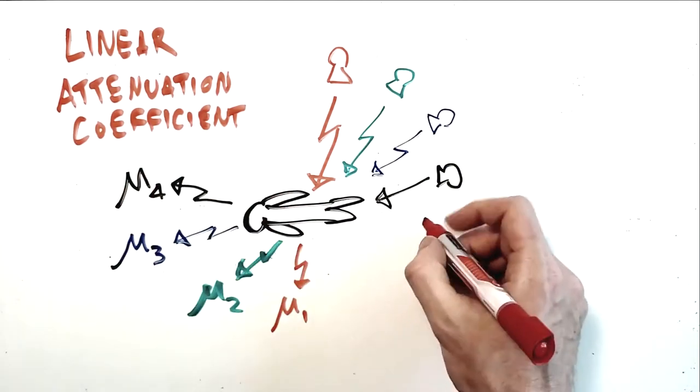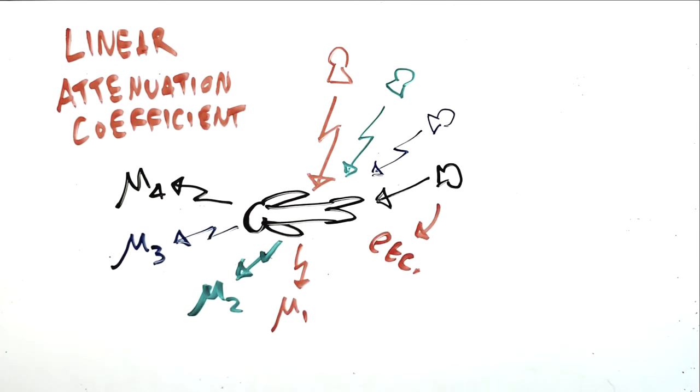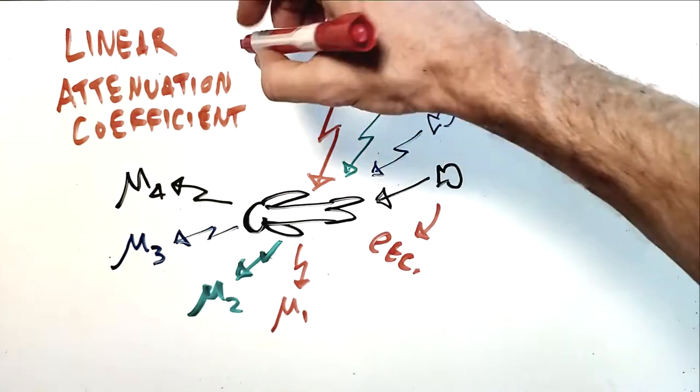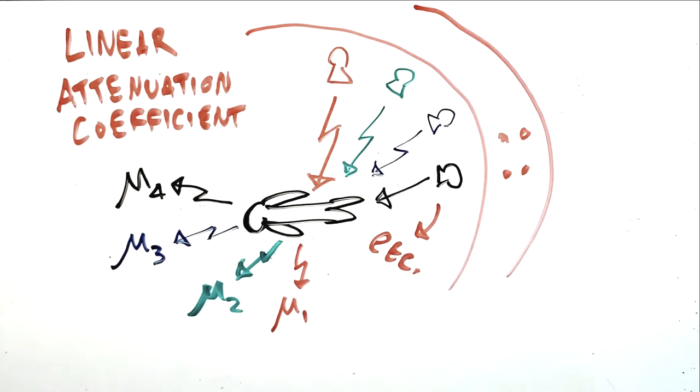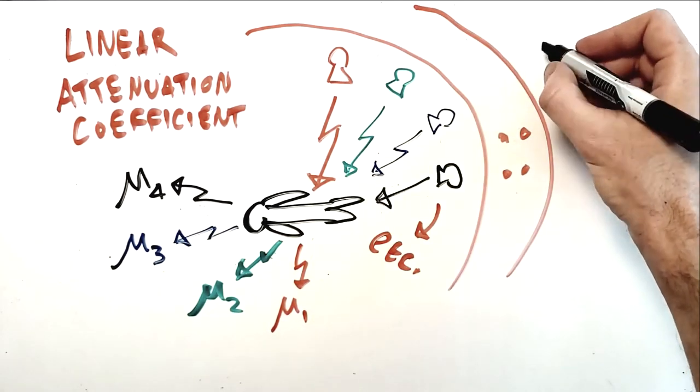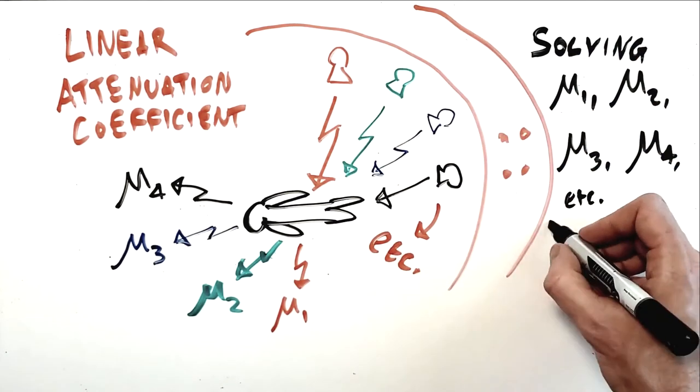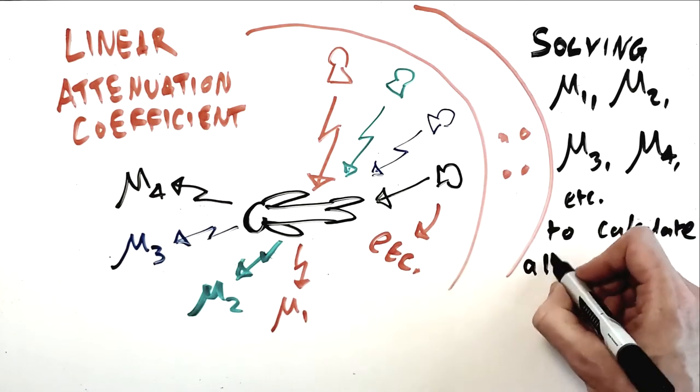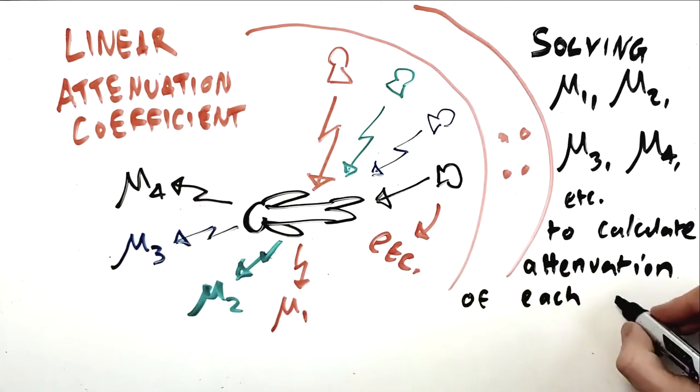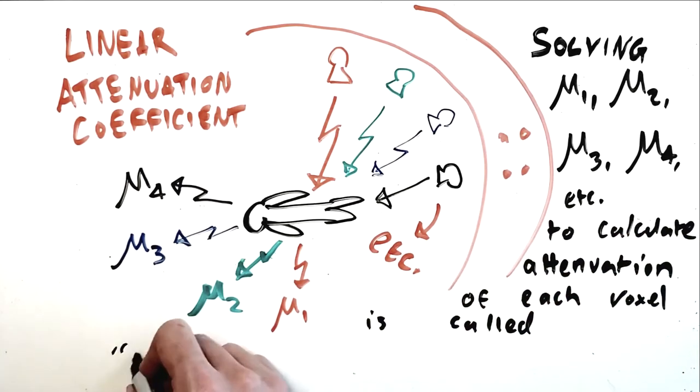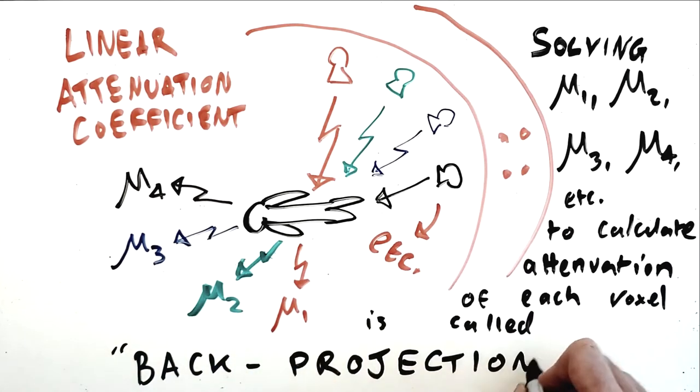This makes for a complex mathematical situation in which the attenuation pathways from all angles need to be unwoven in order to map out where in 3D space x-ray attenuation has occurred. This process of tracing attenuation back to the voxel in which it happened by calculating the linear attenuation coefficient through each voxel from various angles is known as back projection, and that process is the basic building block of reconstructing a CT image.